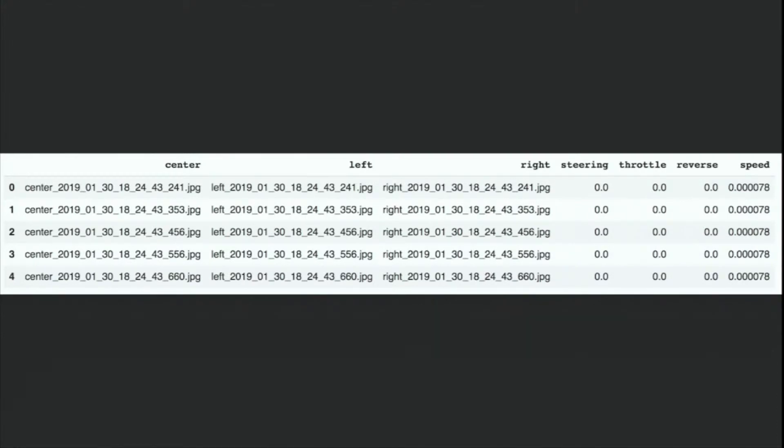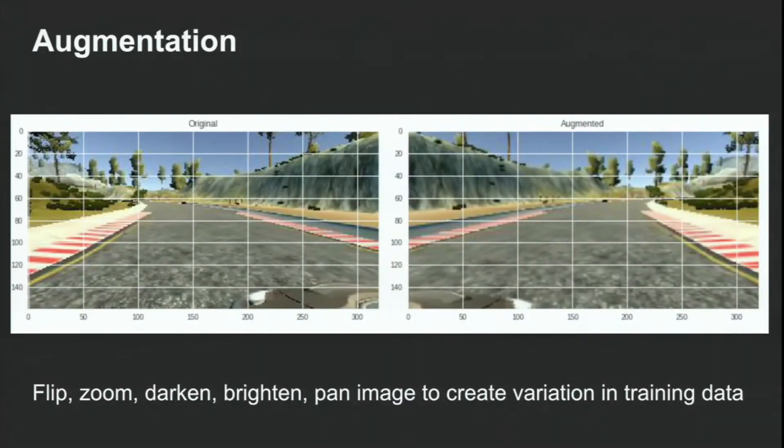The steering angles would usually be negative values all the way to negative one if it was a left turn, and then a positive one if it was a right turn, and anywhere in between for anywhere in between.